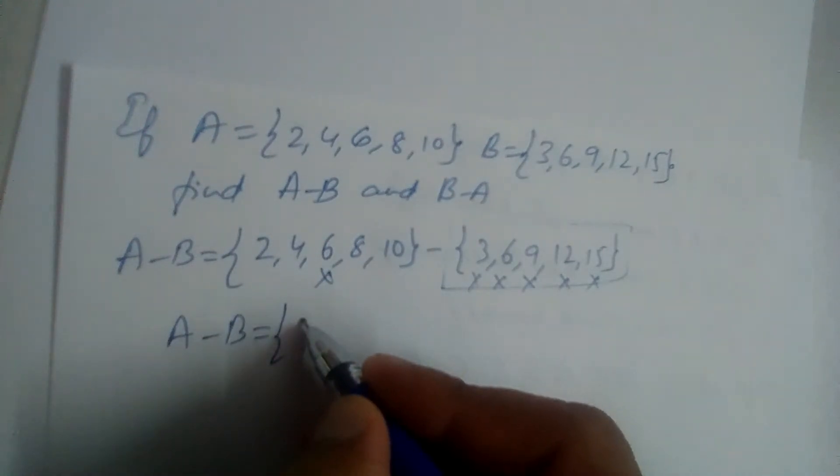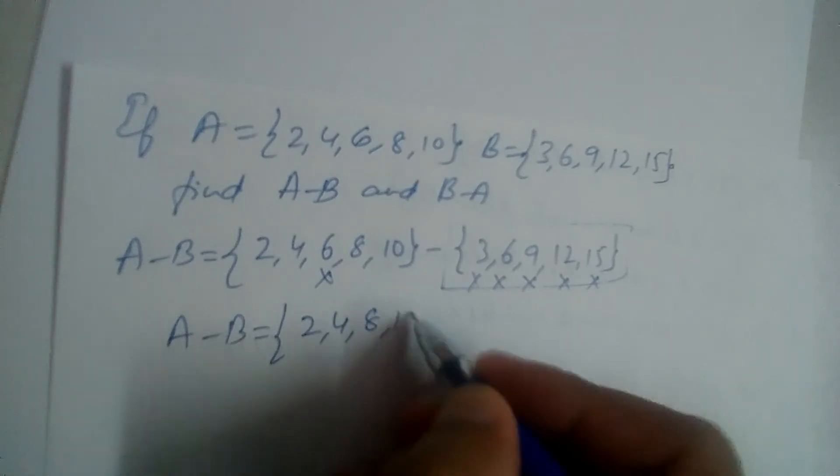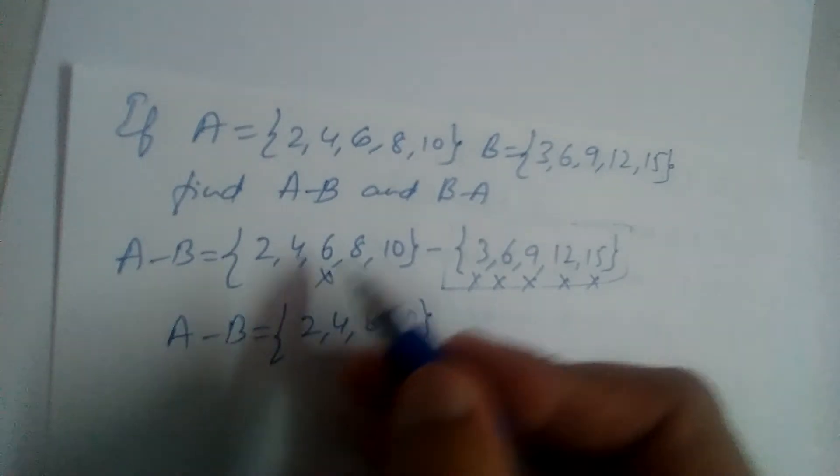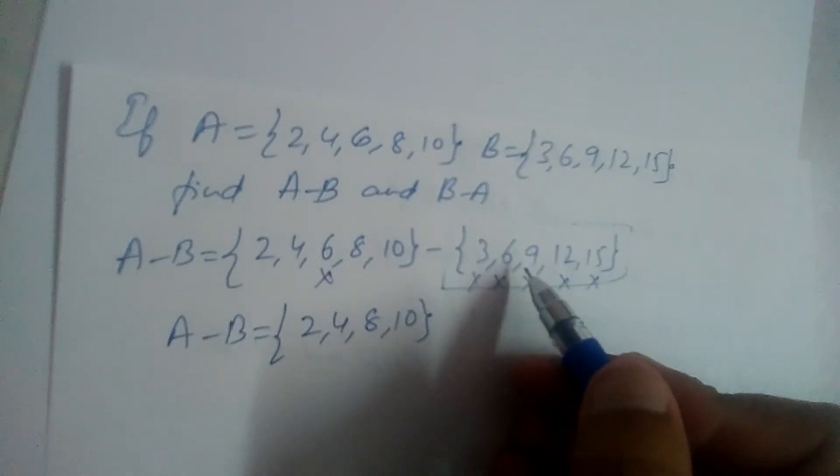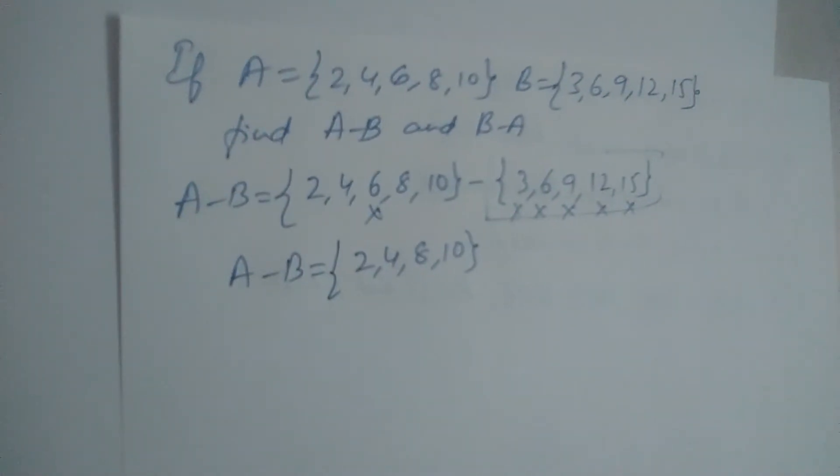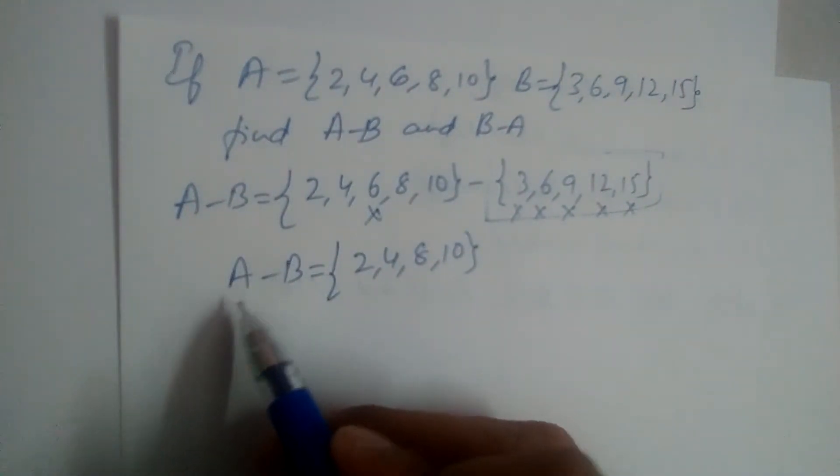So A minus B is equal to 2, 4, 8, and 10. Why are we not writing 6? Because 6 is also present in B. In A minus B, we should write only the elements that are present in A.